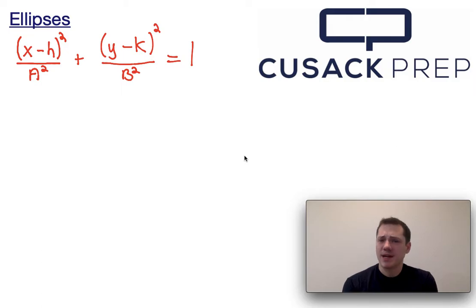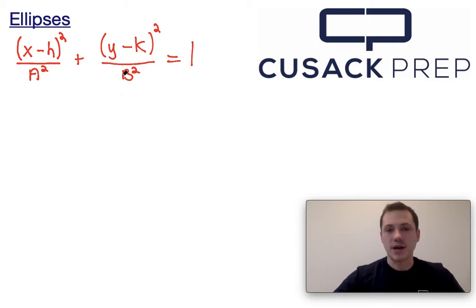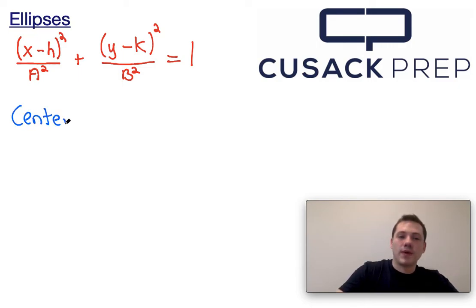So what we can see up here is we have the general form for an ellipse. You may be familiar with it from your course, and we're just going to talk about what each of these letters means. x minus h squared over a squared plus y minus k squared over b squared is equal to 1. Now the center of an ellipse is given by the points h comma k,